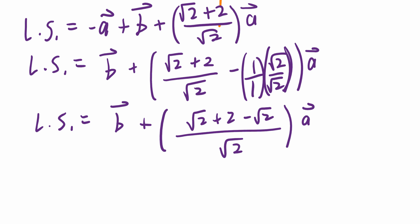And again, if I collect like terms, first of all, cross out root 2 minus root 2. That's going to be 0, and I'm left with 2 divided by root 2. Now, we want to make sure everybody sees the following steps. This is going to be vector B plus 2 divided by root 2 times vector A.